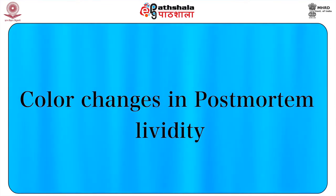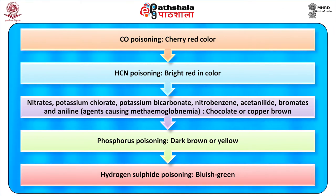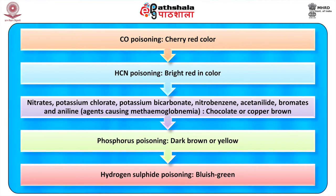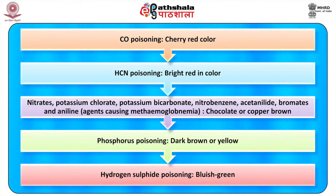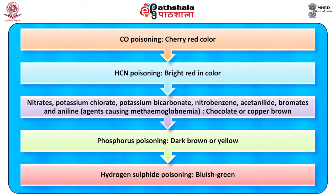There are specific colour changes in post-mortem lividity due to certain poisonings. Carbon monoxide poisoning imparts a cherry red colour instead of the normal reddish-blue or bluish-red tinge. Hydrocyanic acid poisoning imparts bright red colour. Nitrates, potassium chlorate, potassium bicarbonate, nitrobenzene, acetanilide, bromides, and aniline — agents that produce methemoglobinemia — give a chocolate or copper-brown colour. Phosphorus poisoning gives dark brown or yellow colour. Hydrogen sulfide poisoning imparts bluish-green discolouration.